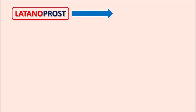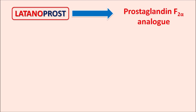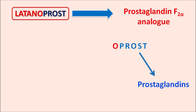Today we are going to discuss latanoprost. Latanoprost is a prostaglandin F2 alpha analog. We can identify the suffix as '-oprost', where 'prost' indicates prostaglandin and 'o' indicates ophthalmic — so latanoprost is an ophthalmic prostaglandin.